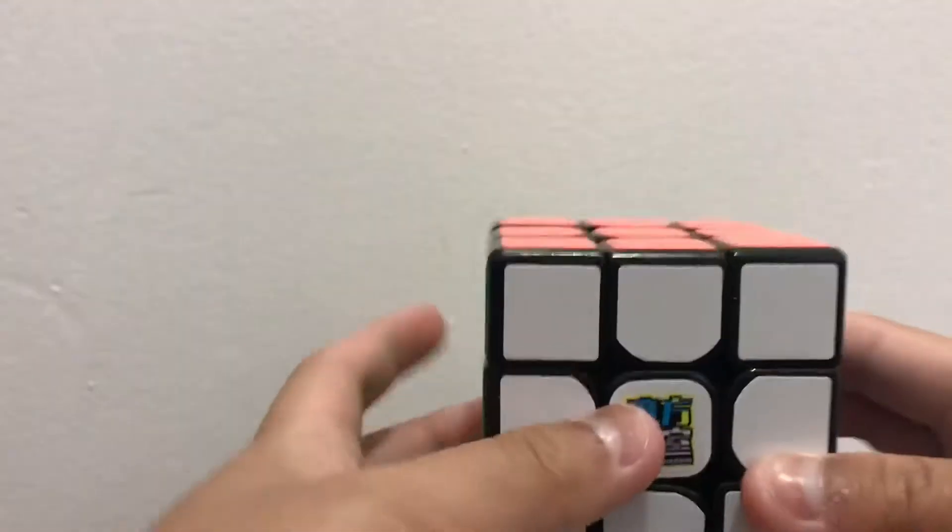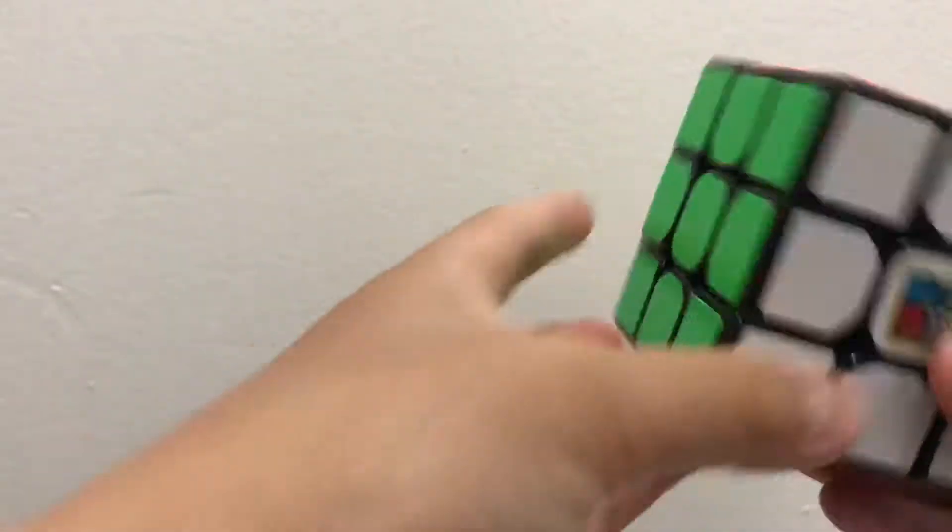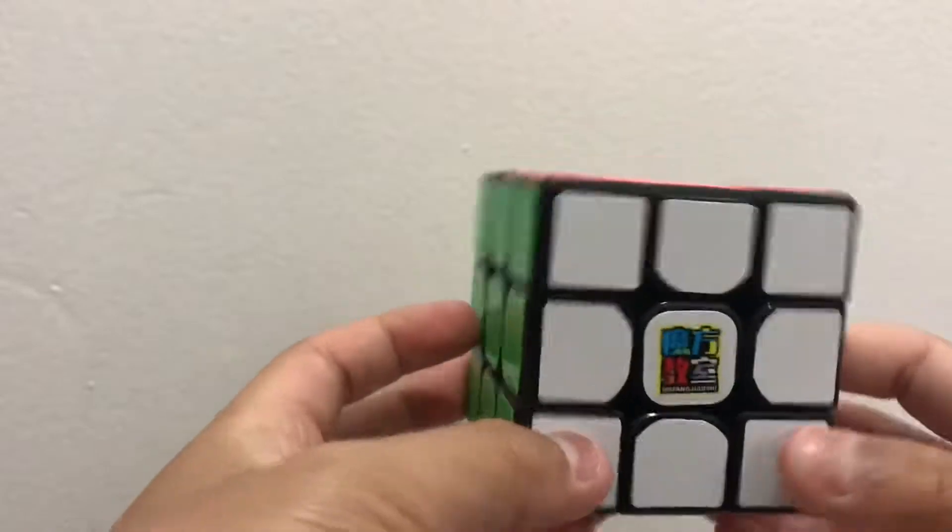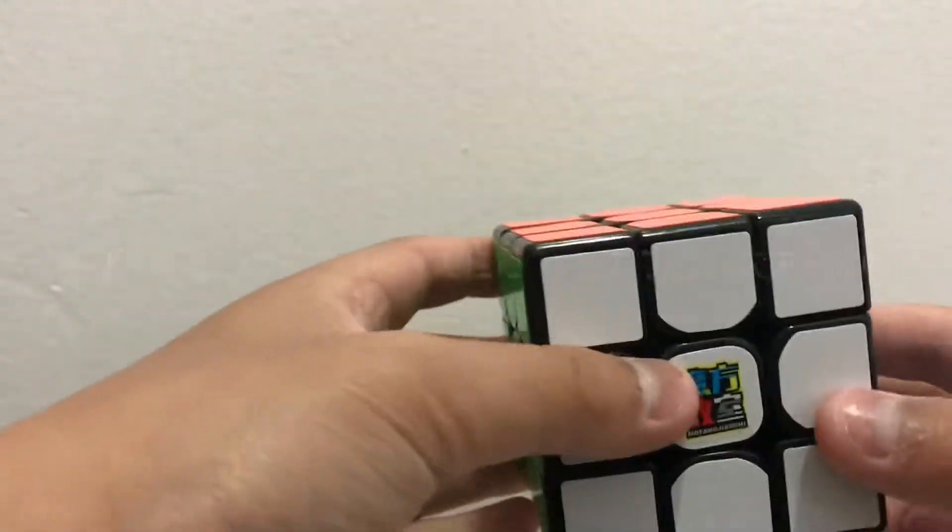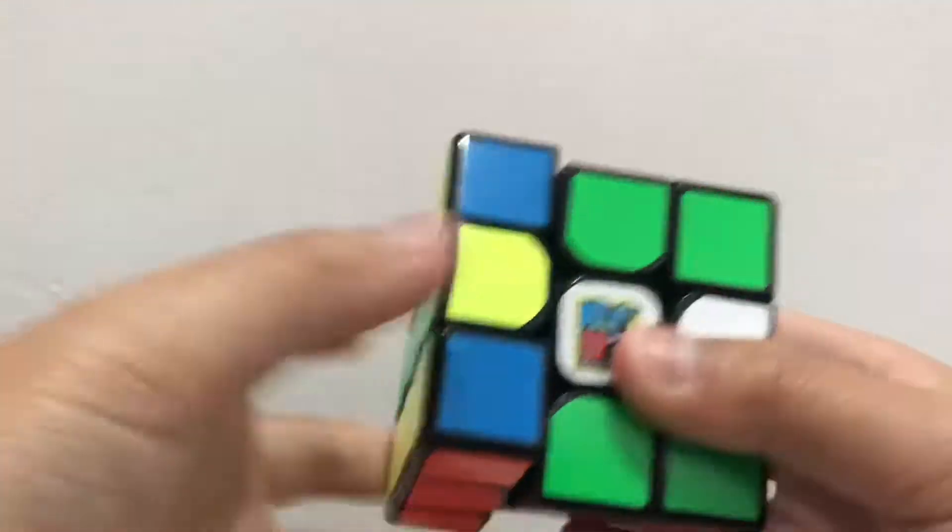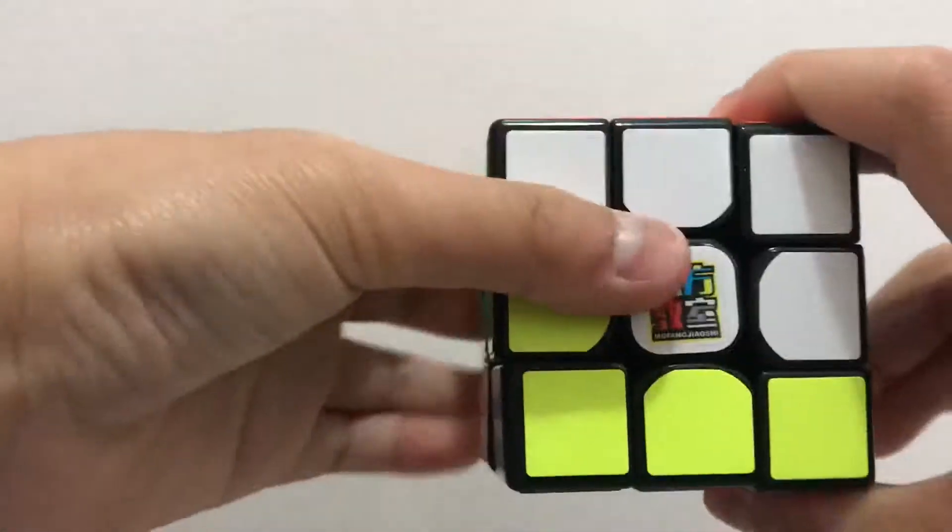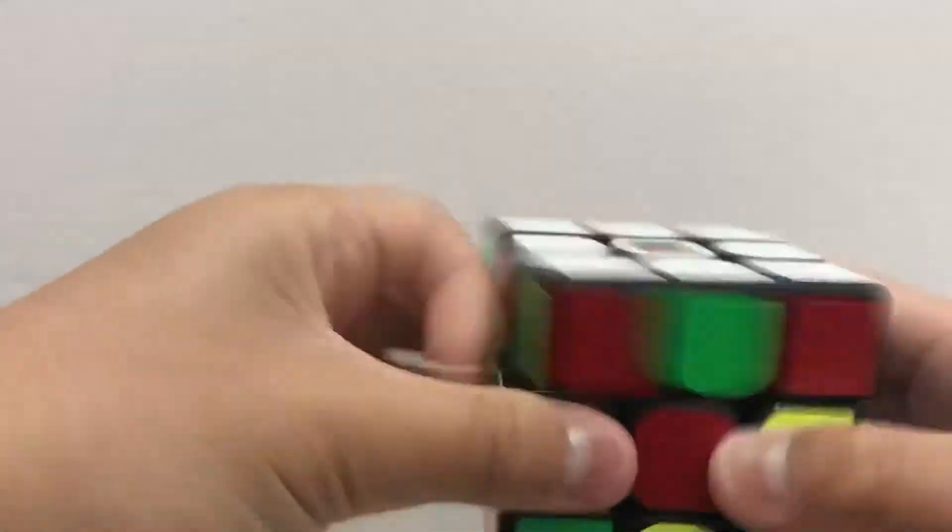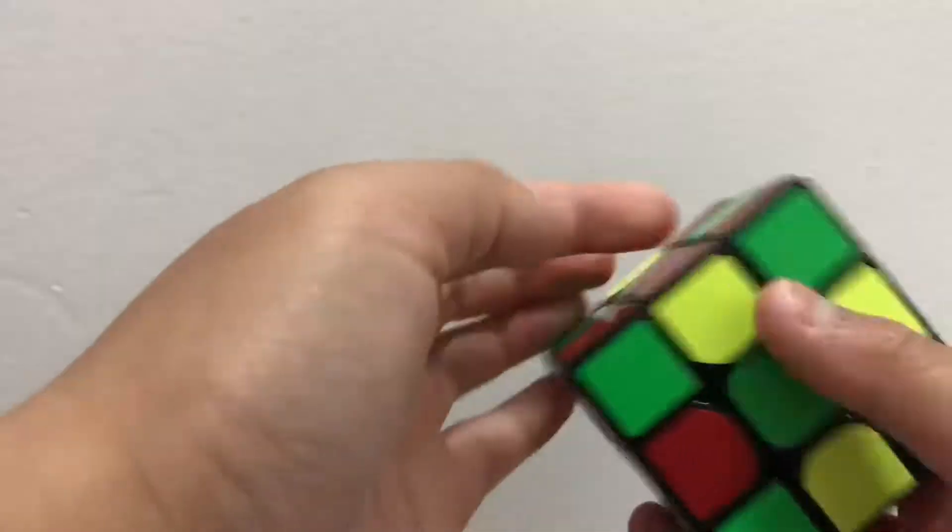It'll show you how to do it, so you have to memorize a set of moves. So here it is, it's gonna be in the description also. Okay, so you got three sides off and the other three sides are not.